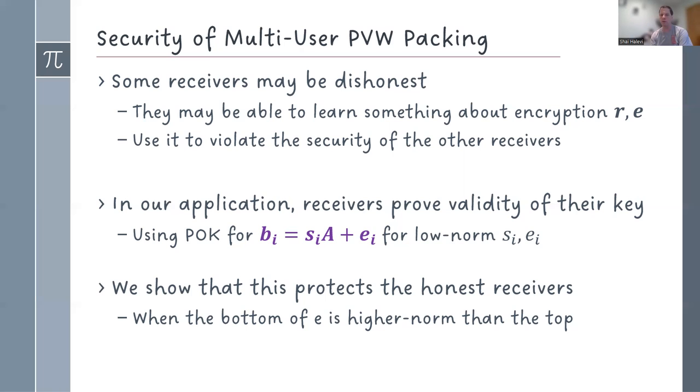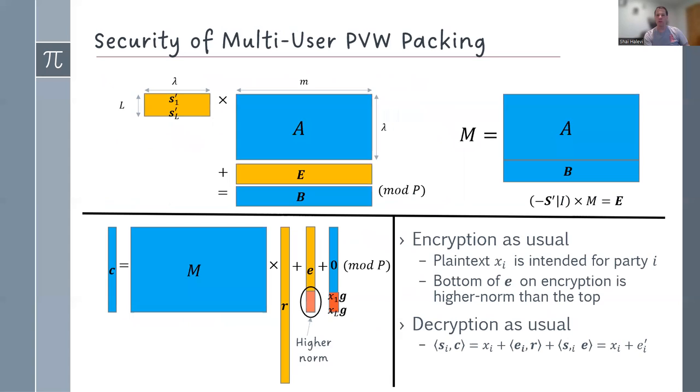So in the proof of security, people can extract from me s_i and e_i. And in that setting, we can show that PVW encryption works beautifully. I do not violate the security of others with a little bit of twist in that the bottom of the additive noise that you do in encryption has to be higher norm than the top. So here is our system, exactly the same as PVW, except the E vector has a bottom corresponding to the one that's used to mask out the plaintext, has higher norm than the others. And we need some noise flooding, but everything else is completely as usual.